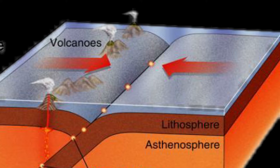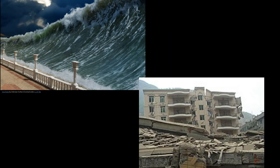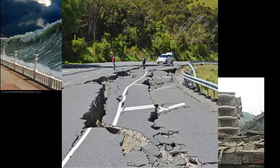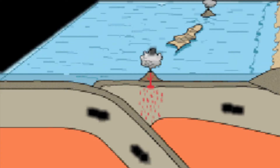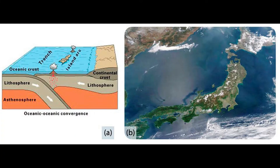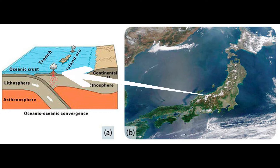The convergence of two oceanic crusts results in some similar events compared to the first type of convergence. Tsunamis may be formed, and earthquakes may happen. There is also subduction because one plate is denser than the other. The front part of the subducting plate becomes magma upon reaching the mantle. Then it builds up pressure due to heat and pushes the crust above it, forming a volcano.